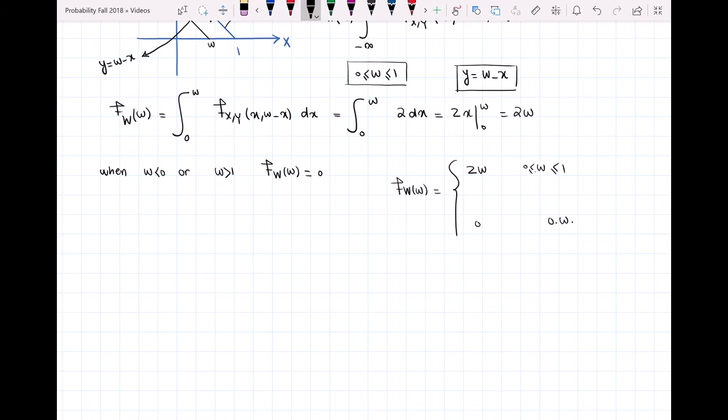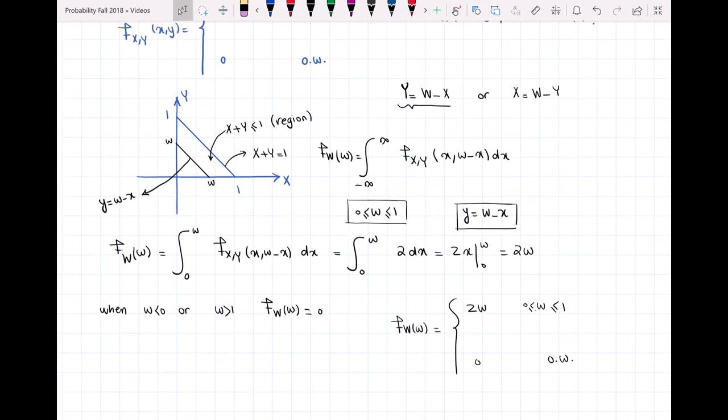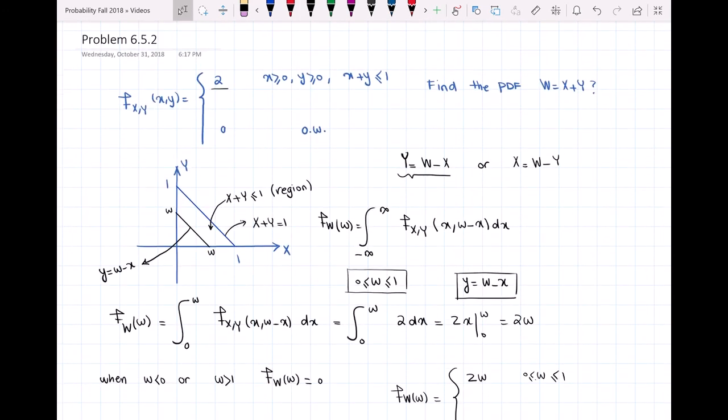The key to the solution was first to draw the region where we have a non-zero PDF. Then we drew the line Y equal to W minus X, and determined where the X's are changing from, from what value to what value.